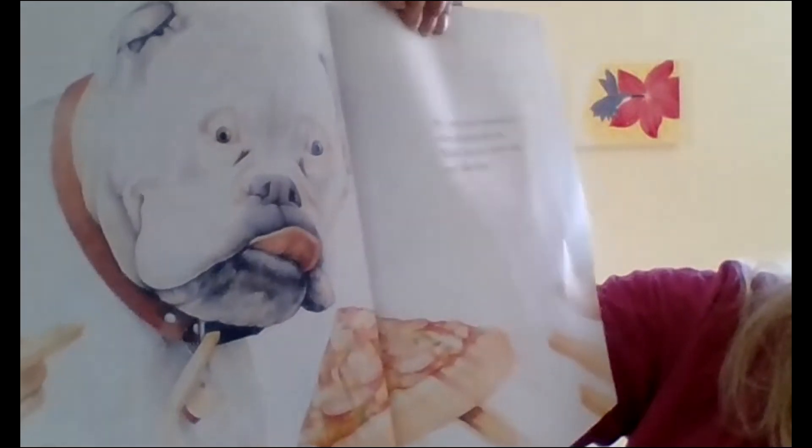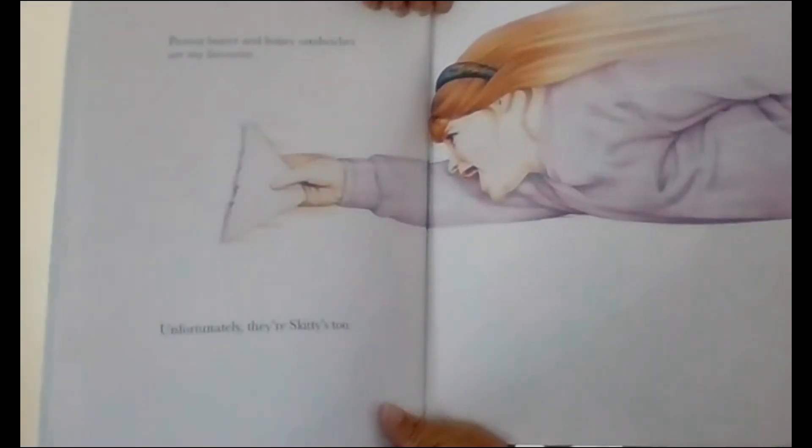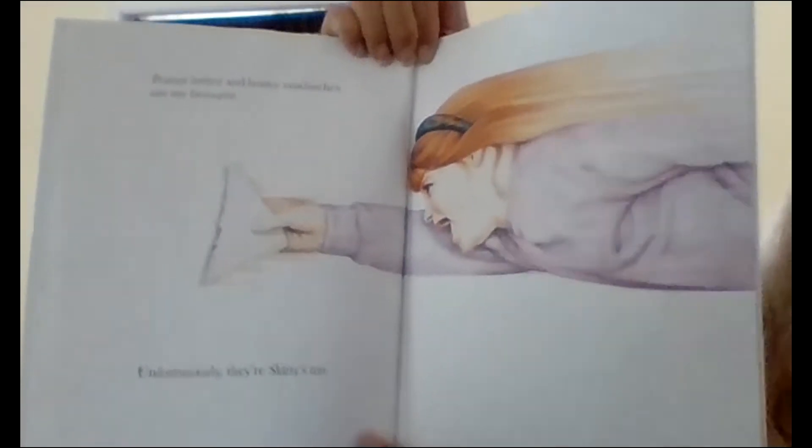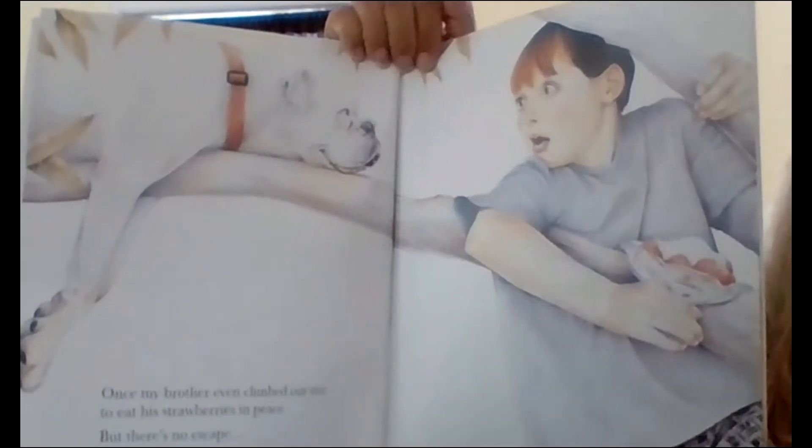We have to be extremely fast when buying fast food. Peanut butter and honey sandwiches are my favorite. Unfortunately, they're Skiddy's too. Once, my brother even climbed our tree to eat his strawberries in peace. But there's no escape.